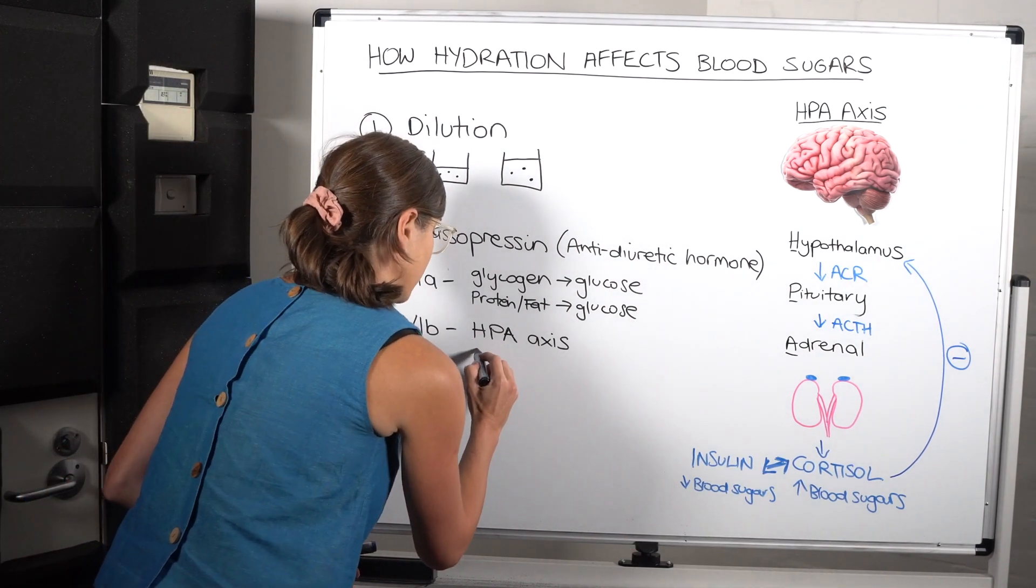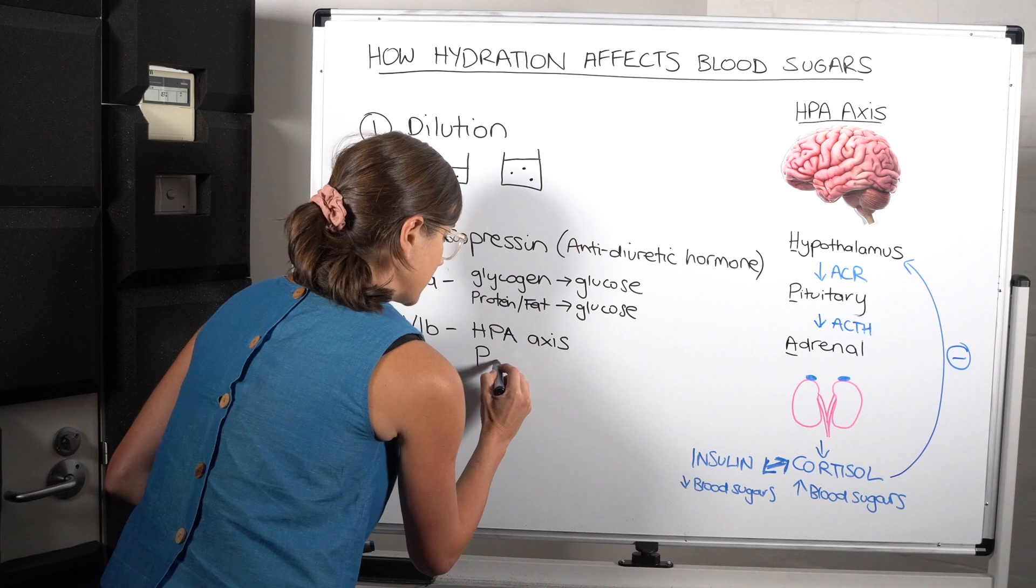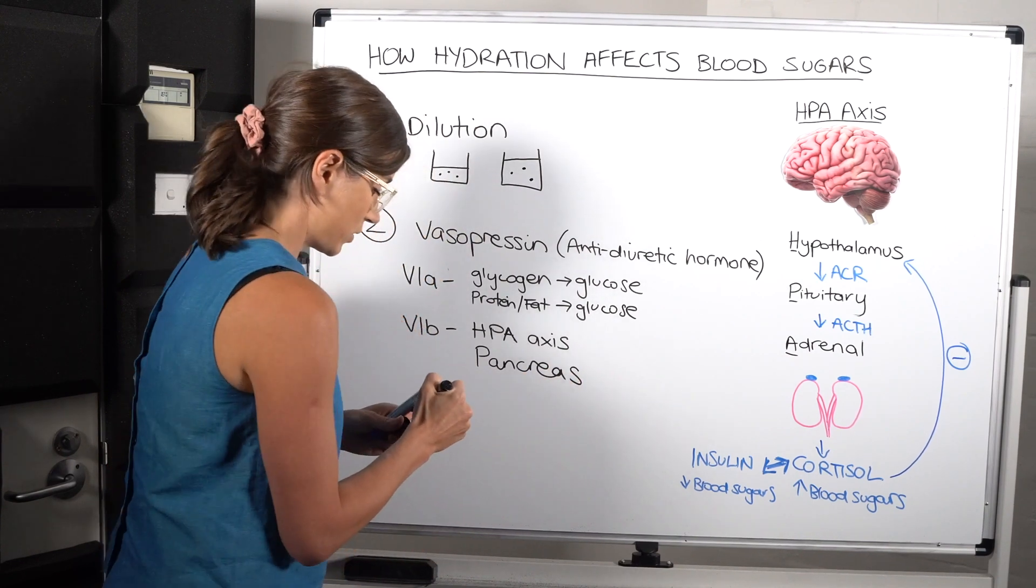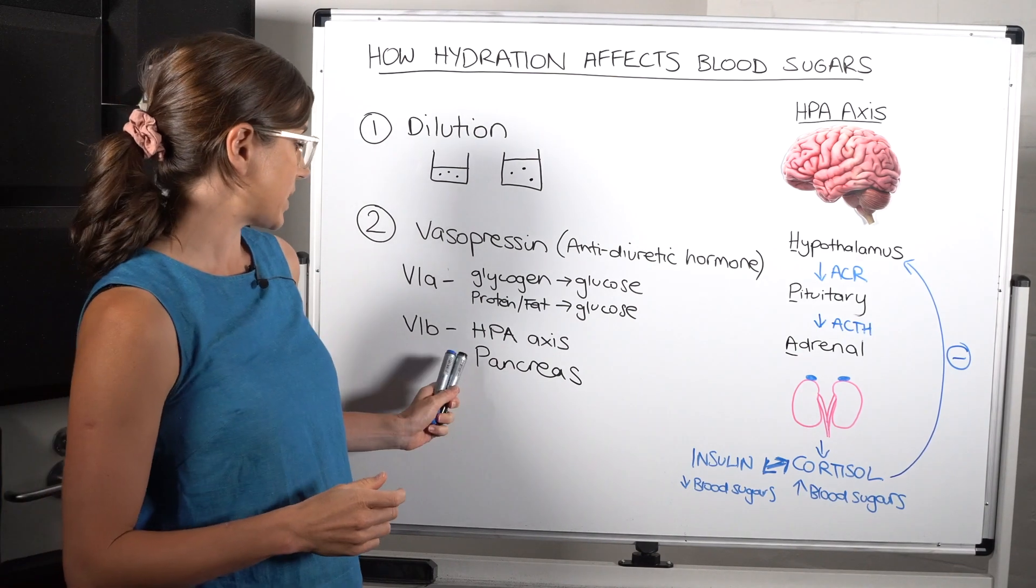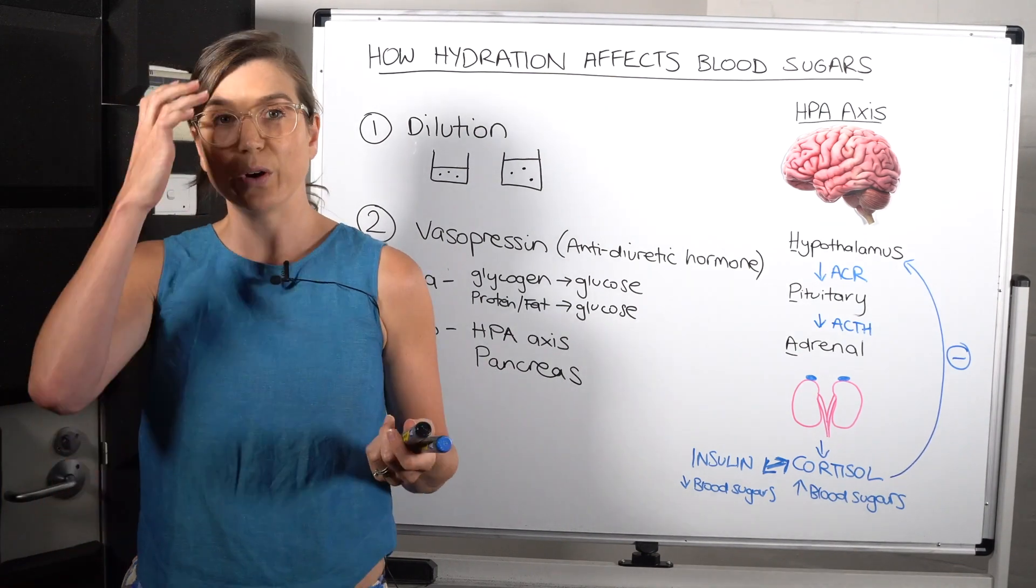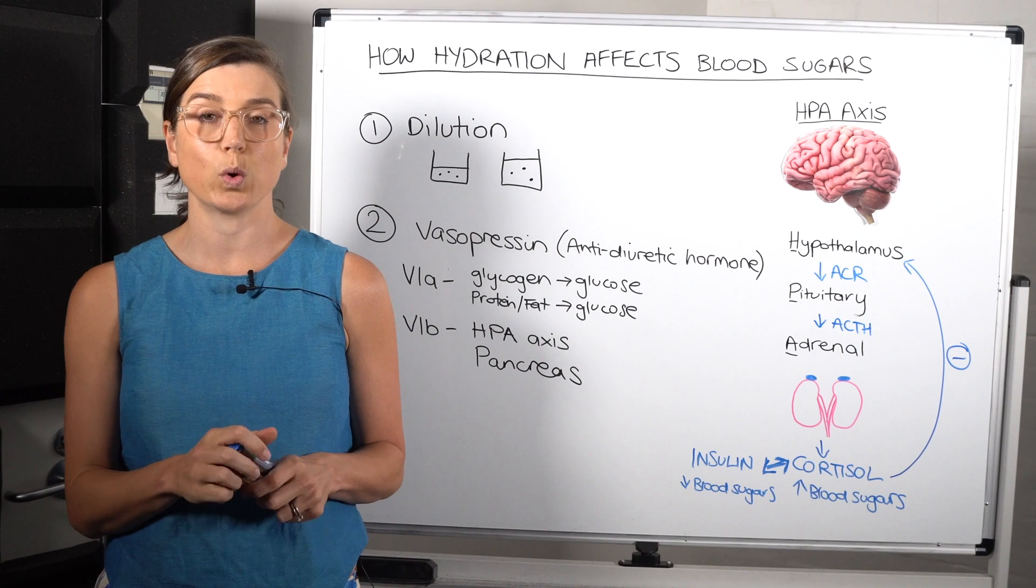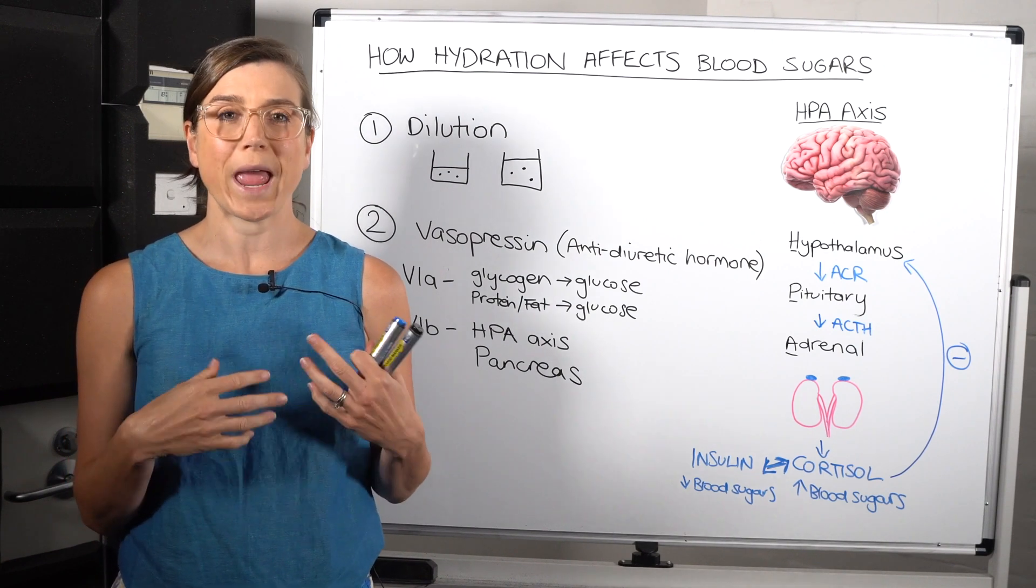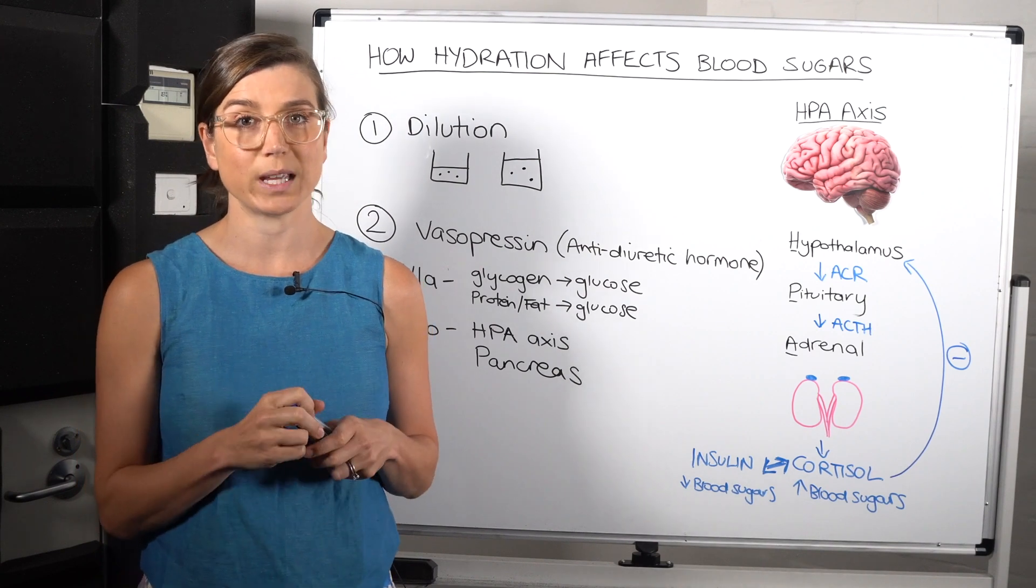And there are also V1B receptors in the pancreas. So these receptors are also in the pancreas, and you know that the pancreas is the organ that releases insulin. So it can also have a direct effect on how much insulin is actually released.